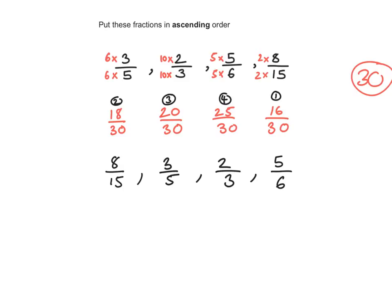The key thing to remember is that in order to compare and order fractions, you need to make the denominators — the bases — the same. And the way you make the denominators the same is to find the lowest common multiple, then multiply each denominator to convert it into that lowest common multiple.